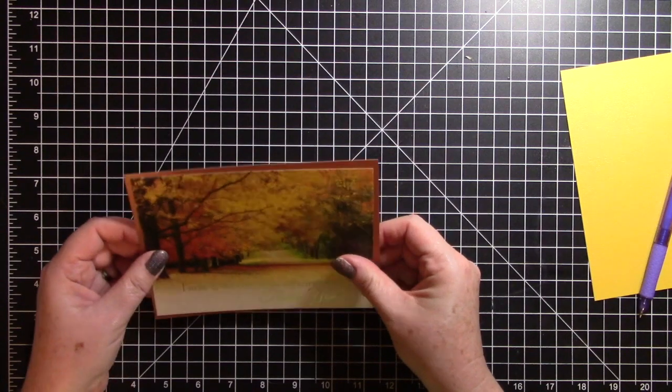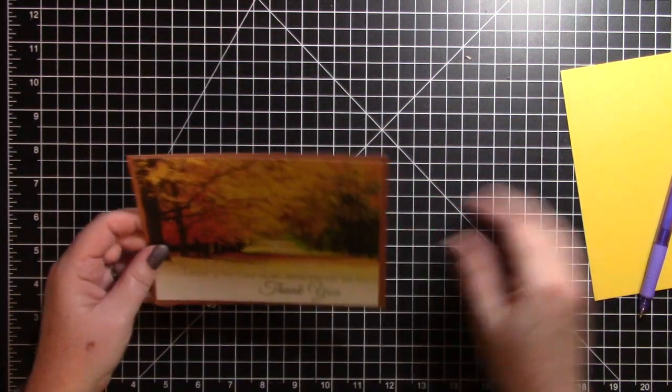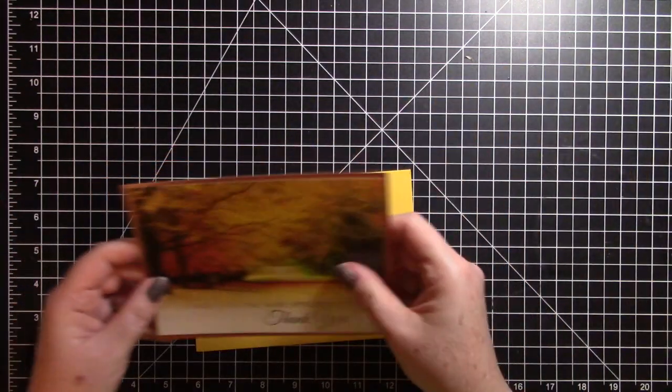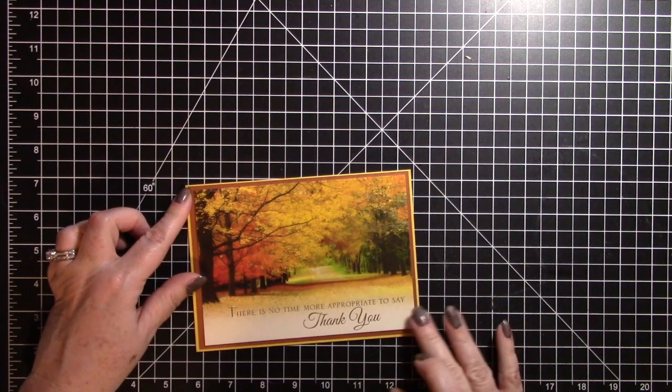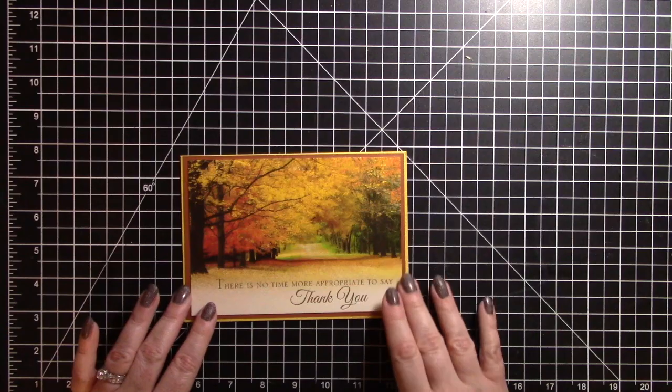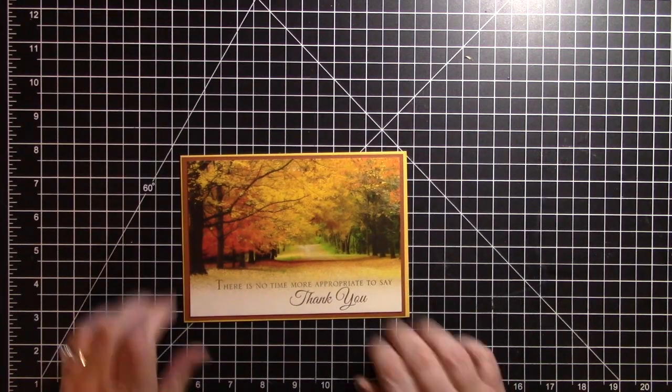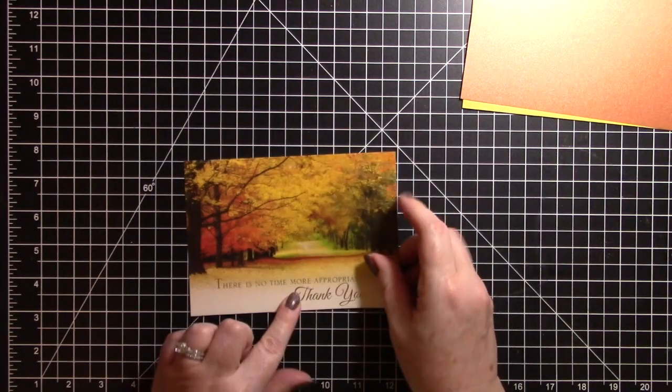And that's how that looks on that base and then on the yellow. I think just that little tiny bit of yellow on the edge really does make it pop. All right, so I'm going to go ahead and work on this front piece.